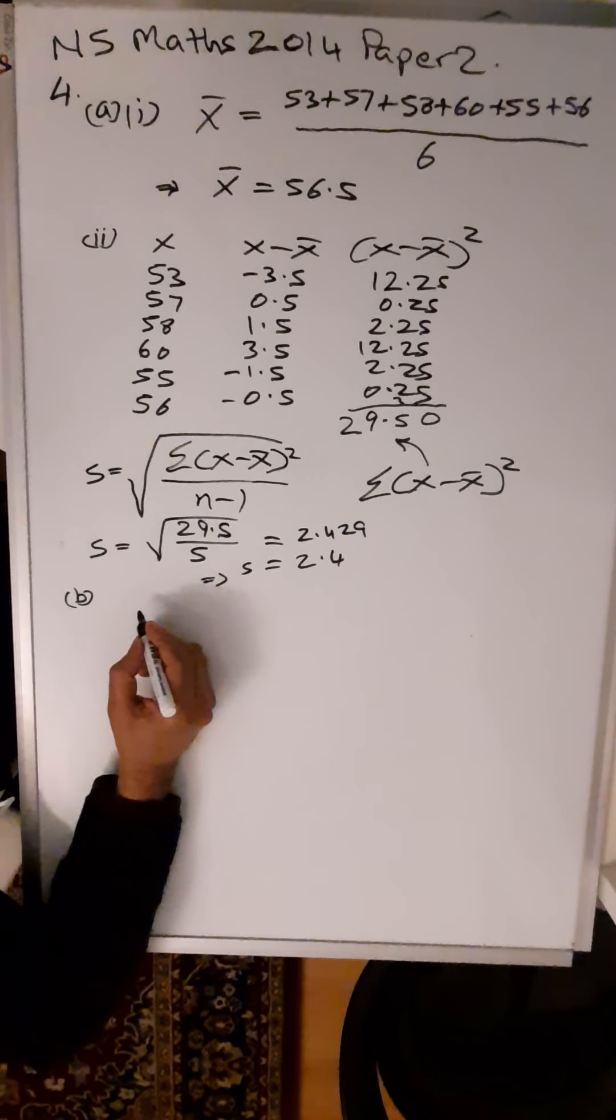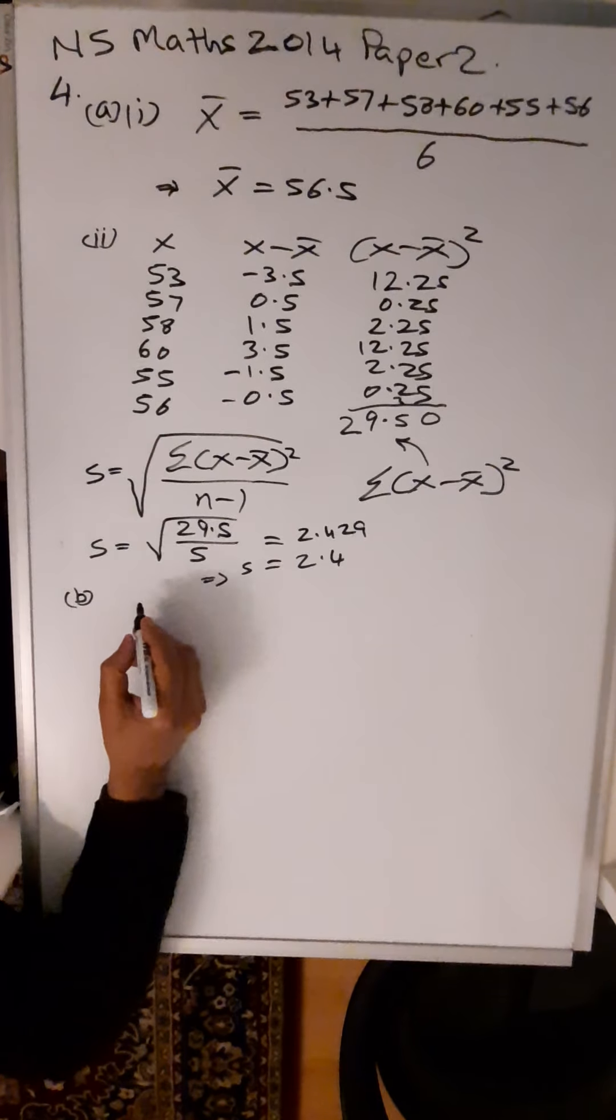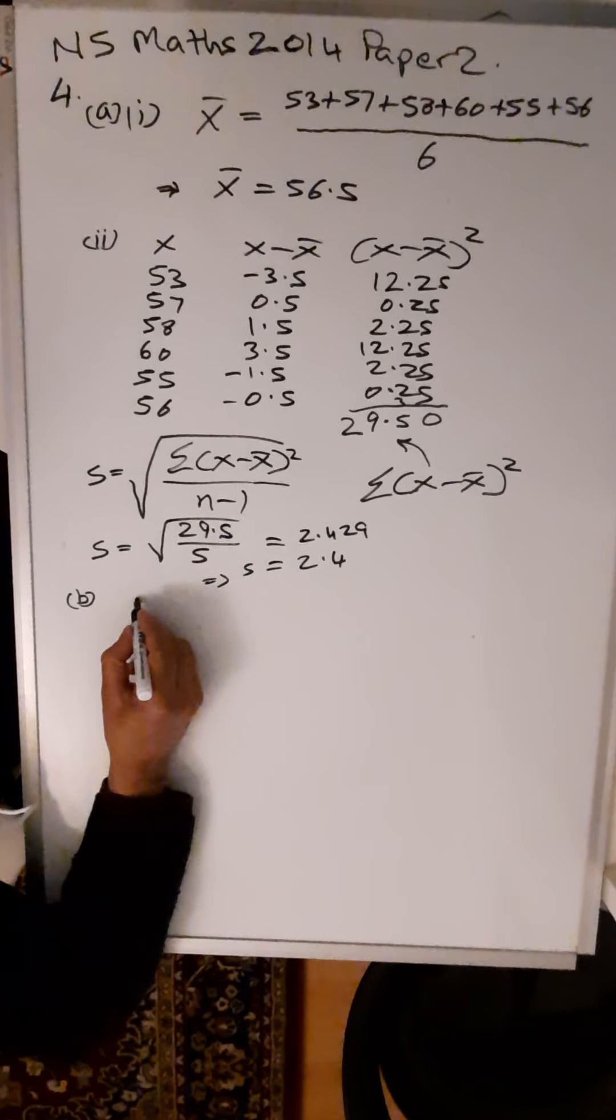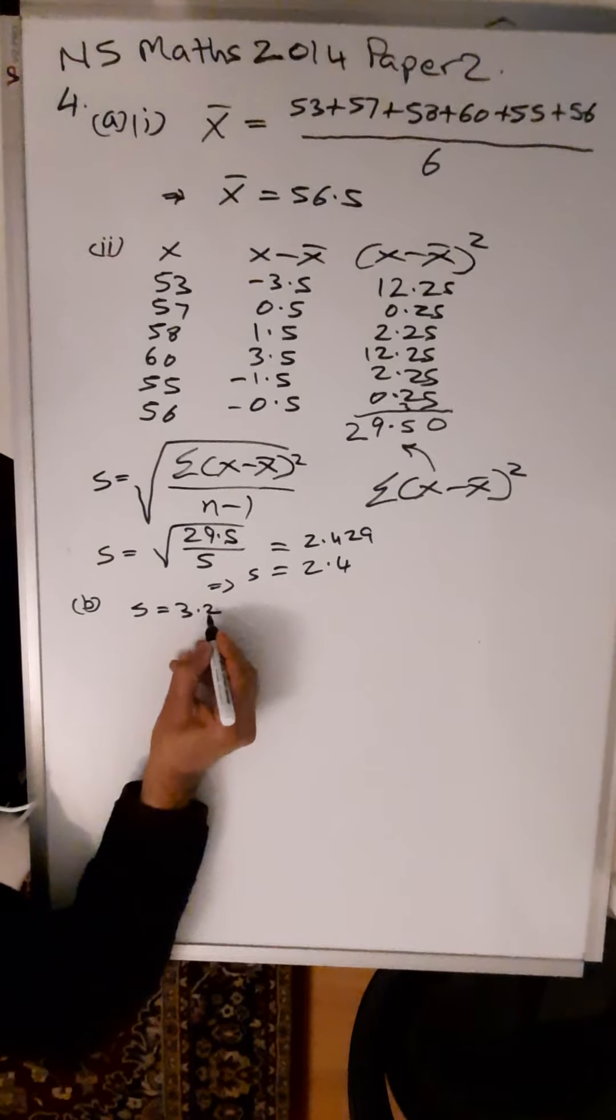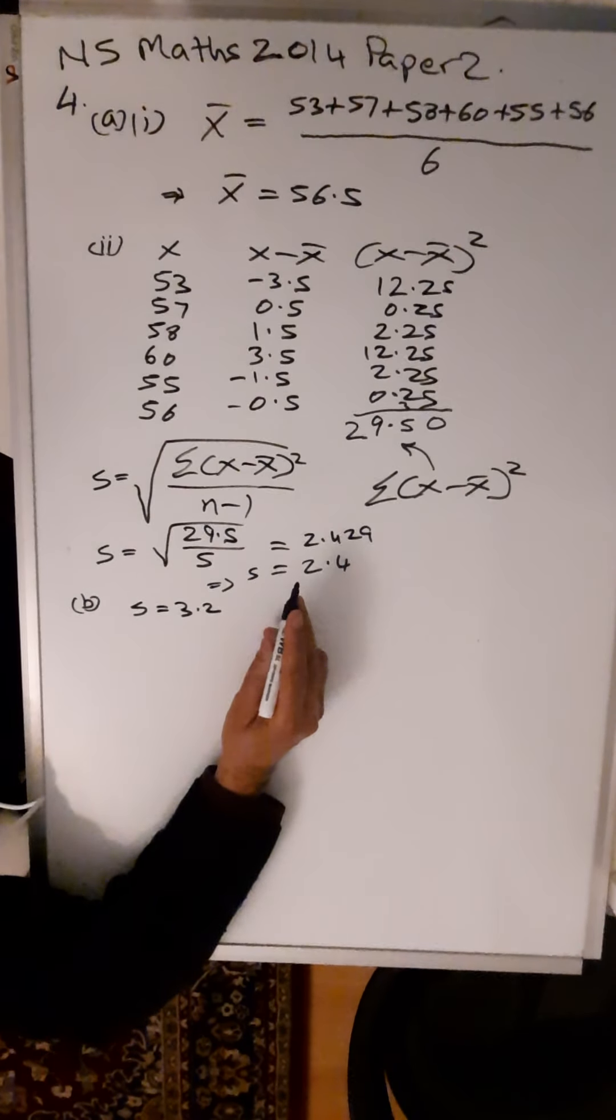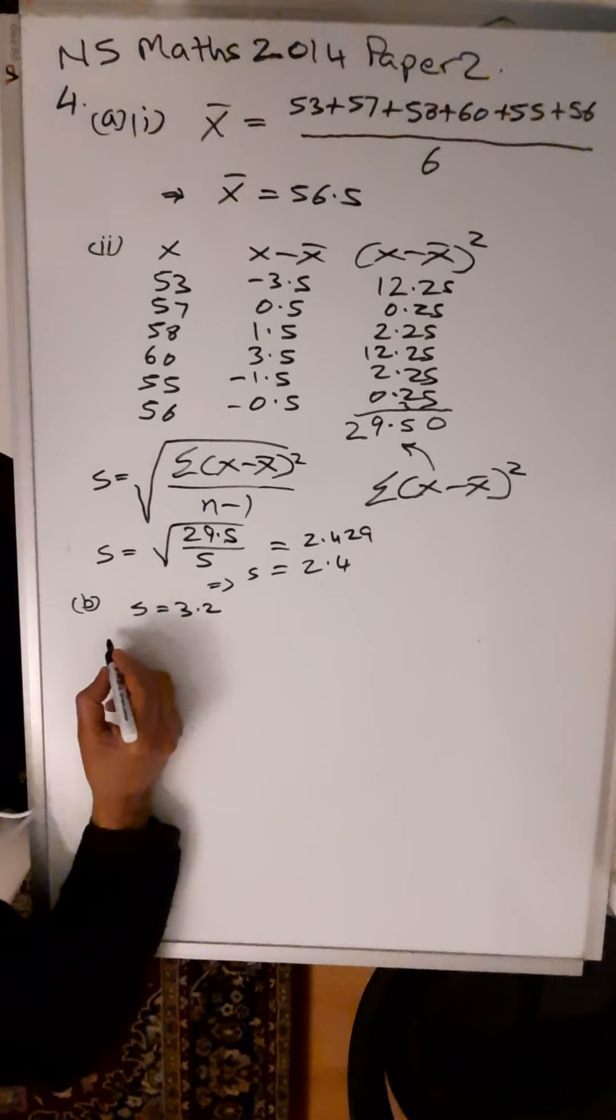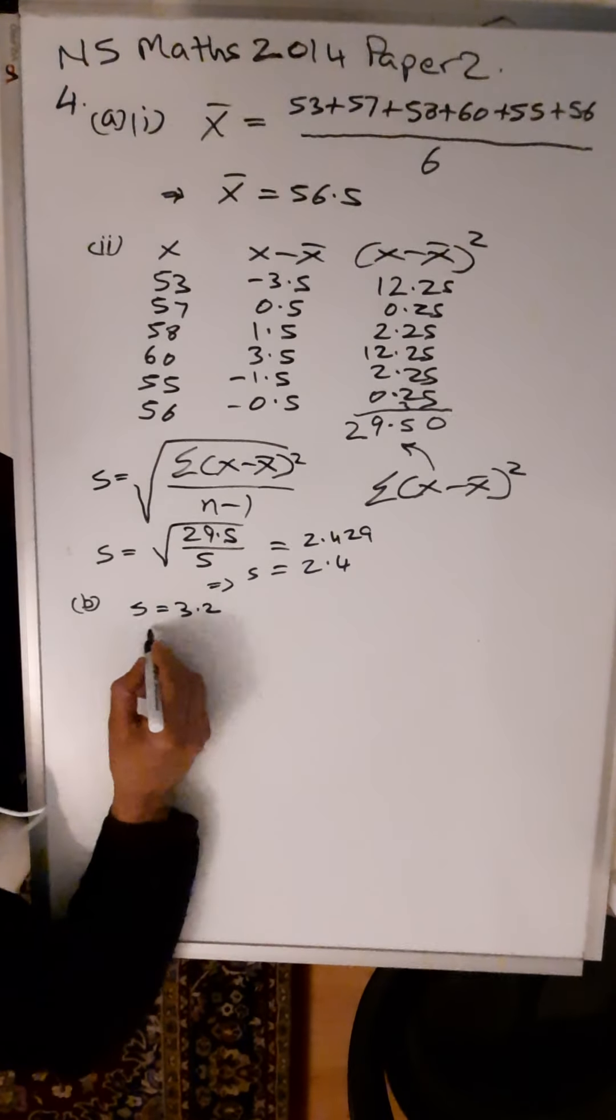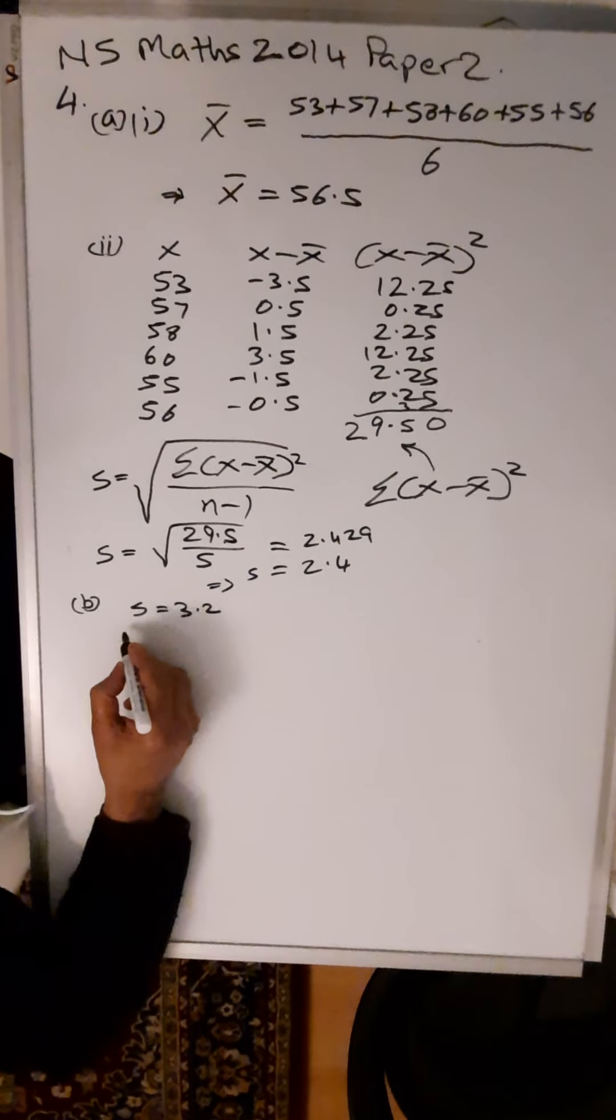And if you look at the question, the second part B of the question, they're giving you a standard deviation to 1 decimal place. So your standard deviation is 2.4. That's part A-ii for three marks.